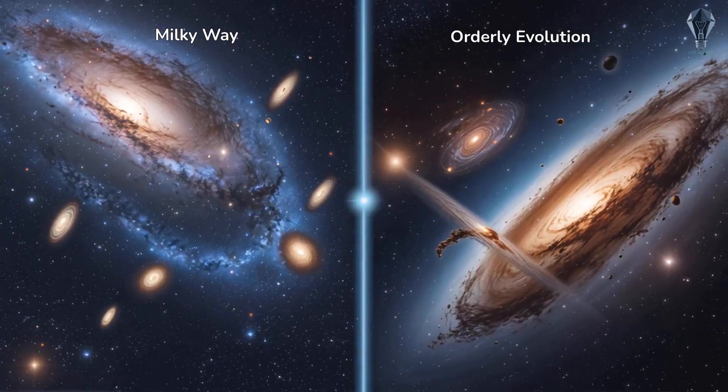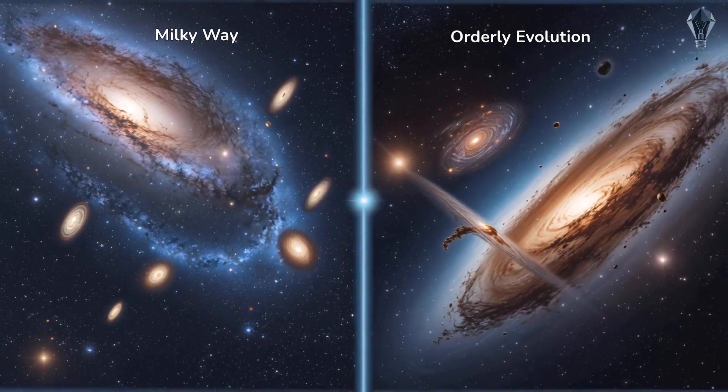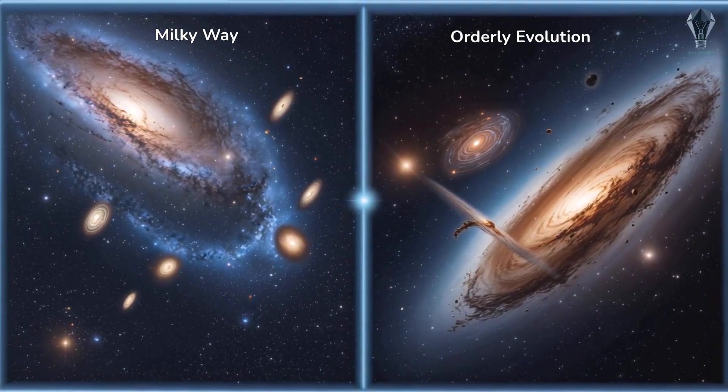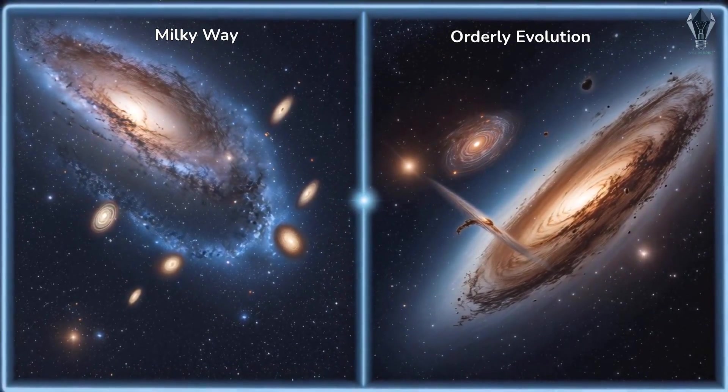These clues paint Andromeda as a cosmic oddball with a turbulent history, very different from our Milky Way, challenging the idea that all big spirals evolve the same way.